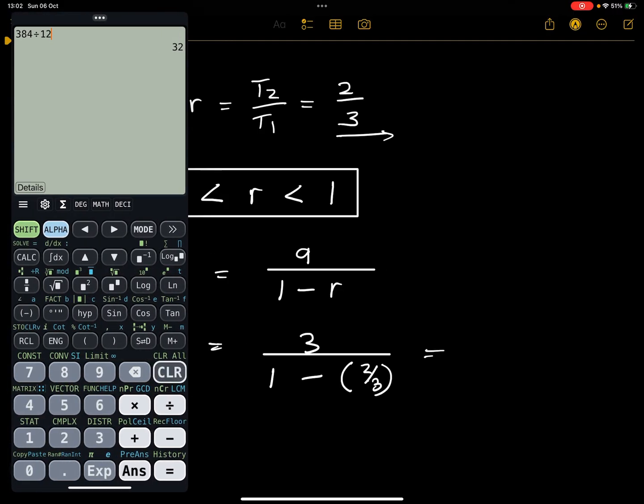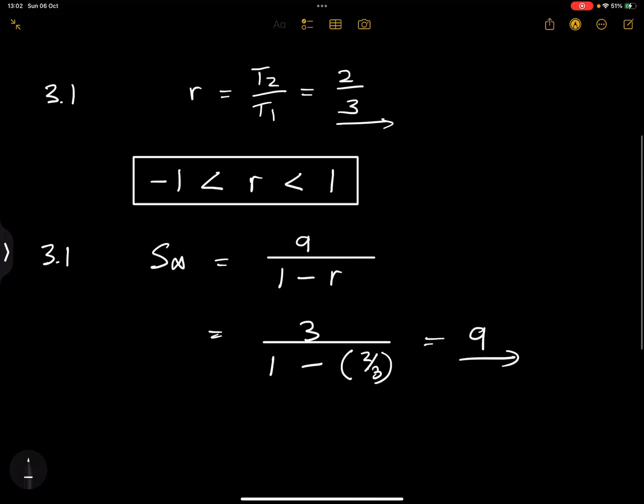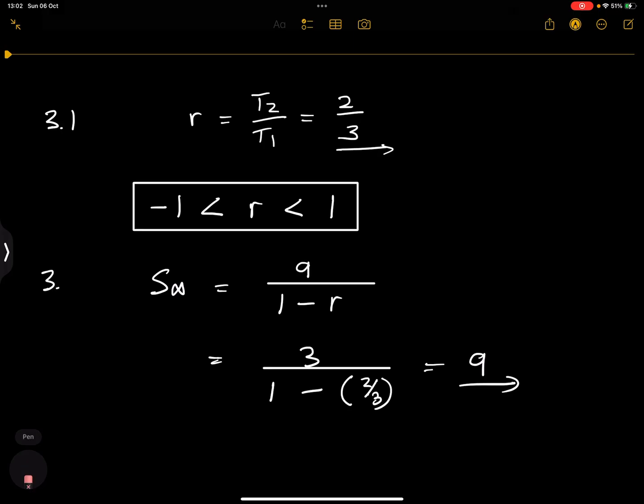So I'll say 3 divided by, I'll put that in brackets, that would be 1 minus 2 over 3. And close that bracket there. And that's our answer, so which means that the sum to infinity is equal to 9.